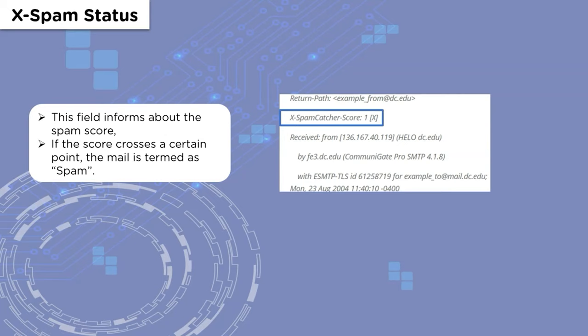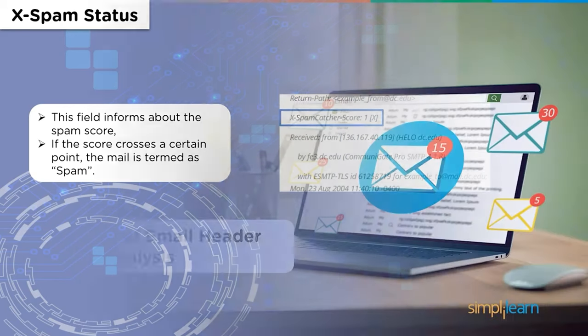Then we have the X-Spam Status, which indicates the spam score and the threat level of an email. If the generated value crosses the maximum threshold, the email will be classified as spam. Now that we're clear about the different fields in an email header, let's see why email header analysis is important.